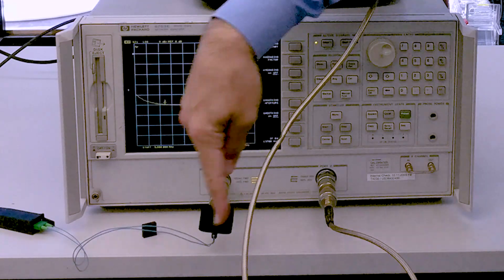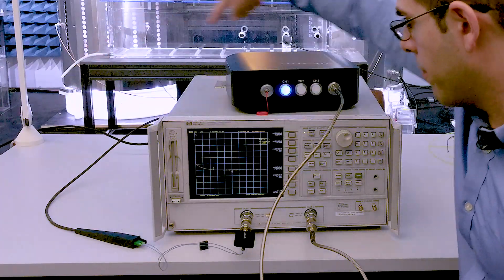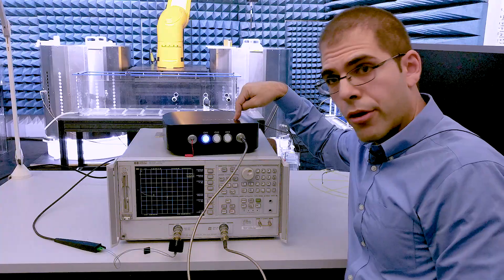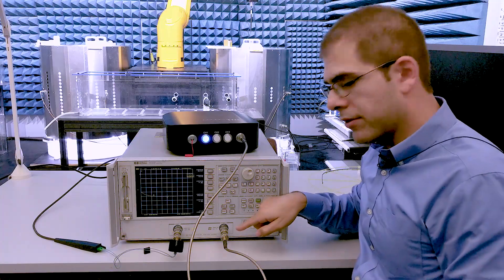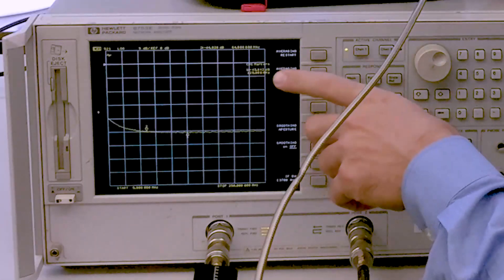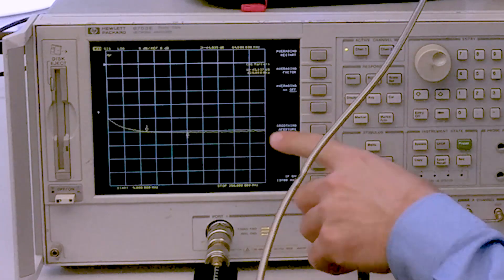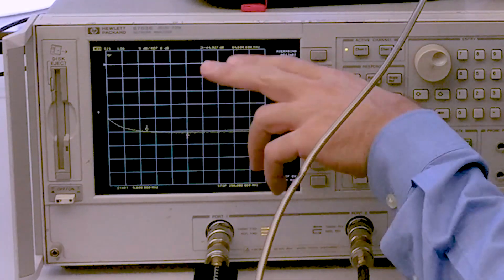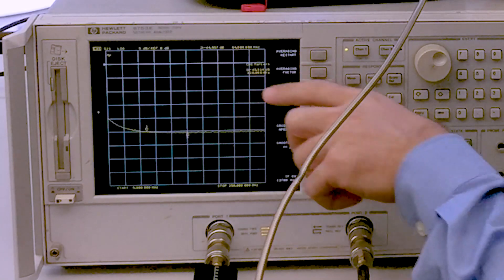The RF over fiber unit is connected by fiber optic cable to the remote unit, which is connected itself to port two of the VNA. I've set the VNA up to measure the S21 at 64 and 128 megahertz. It has a very flat response, and I'm looking at minus 45 dB.